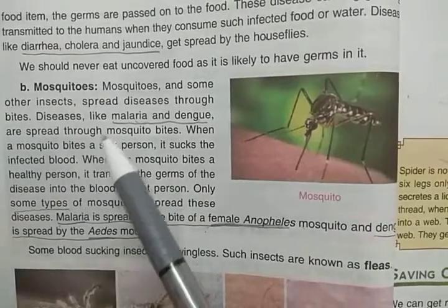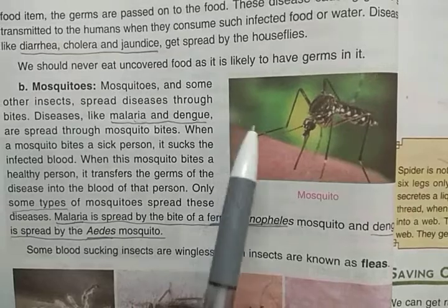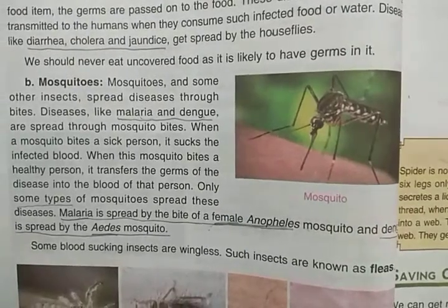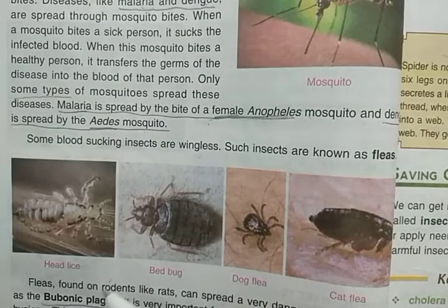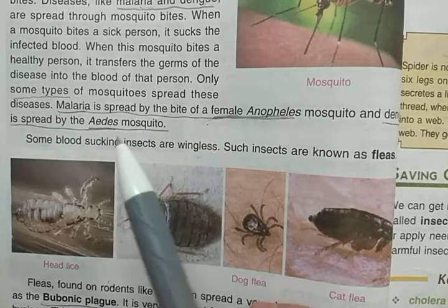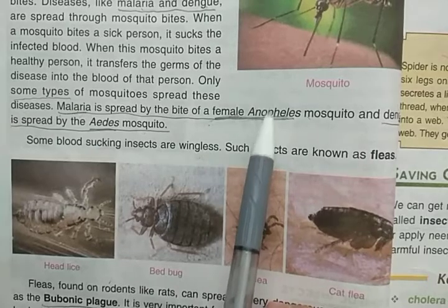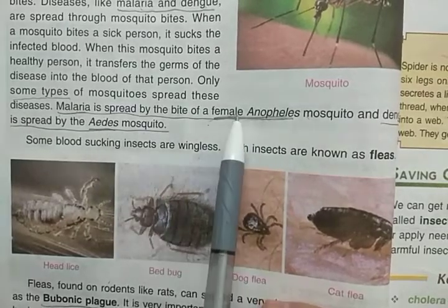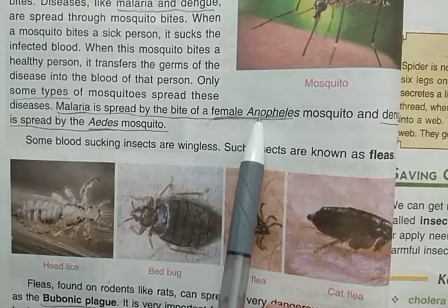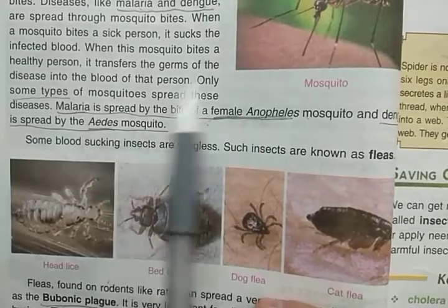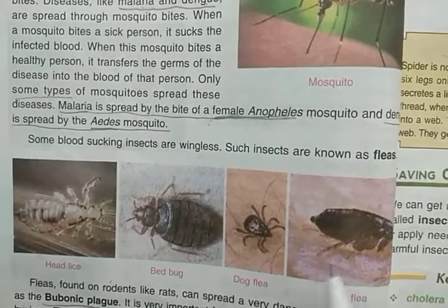Mosquitoes cause malaria and dengue. There are special types of mosquitoes that spread these diseases. Malaria is spread by the bite of the female Anopheles mosquito. I have told you to learn these names — female Anopheles spreads malaria, and dengue is spread by Aedes mosquitoes.